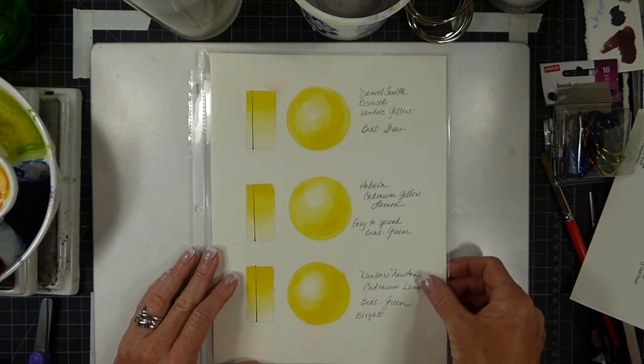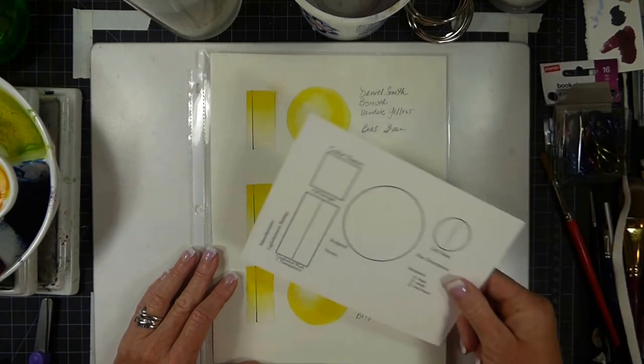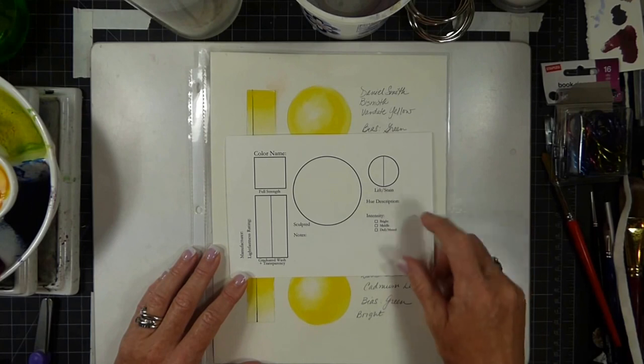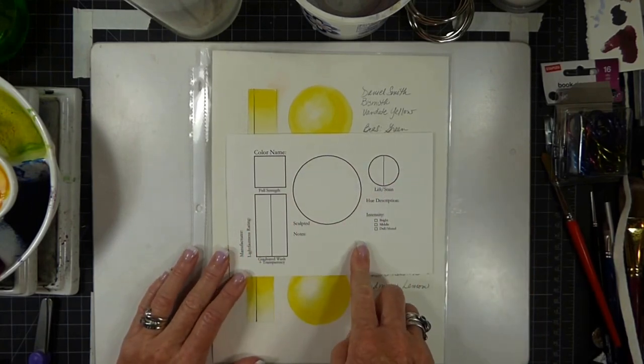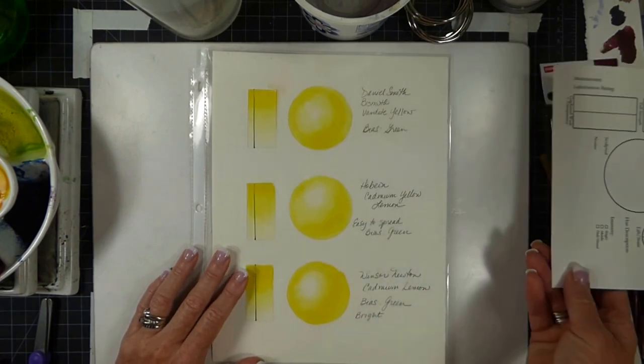One of the things that happens for me when I get a new tube of paint is I go through a series of exercises. As I've learned a little bit more, this kind of format is better for me and that's what I've provided for you in the lessons.